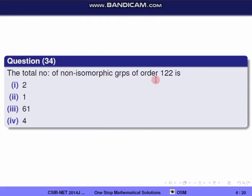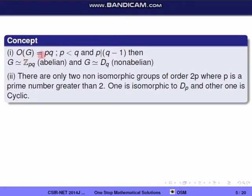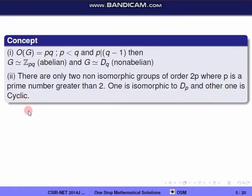Question 34: find the total number of non-isomorphic groups of order 122. If the order of G equals pq where p and q are primes with p < q and p divides q−1, then G is isomorphic to Z_{pq} (abelian and cyclic) and also isomorphic to D_q (non-abelian and non-cyclic). If a group has order 2p where p is a prime greater than 2, there are exactly two non-isomorphic groups.